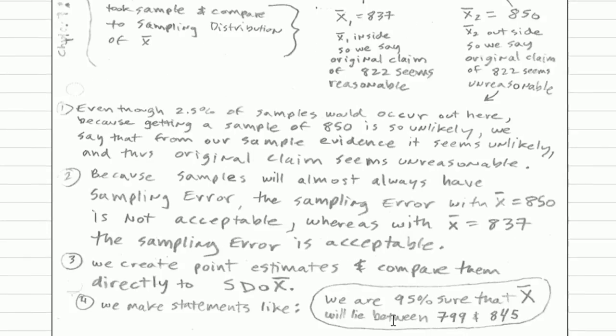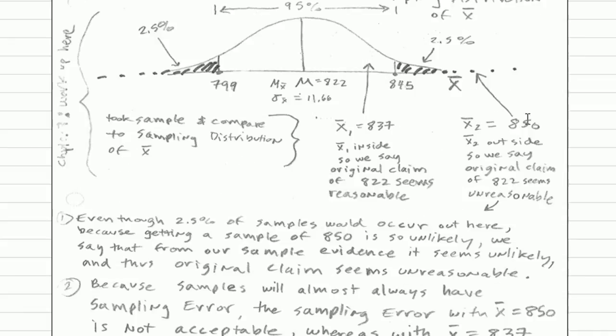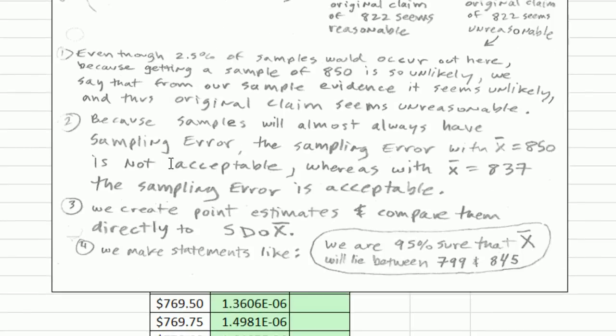Now in chapter 9, we'll use these techniques here in hypothesis testing. And we'll be even more careful with the language. We'll say things like, even though 2.5% of sample means would occur out in this range right here, because getting a sample of 850 is so unlikely, we say that from our sample evidence, it seems unlikely that our original claim seems reasonable. Because samples almost always have sampling error, the sampling error with x-bar equals 850 is not acceptable, whereas the x-bar with 837, that sampling error is acceptable.